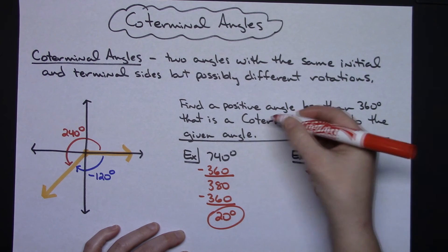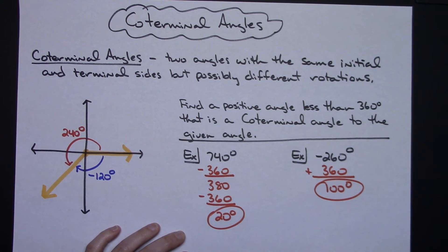So I'm going to add 360 degrees. I'm going to get a positive 100 degrees. And it's a positive number less than 360, so I have my coterminal angle there.